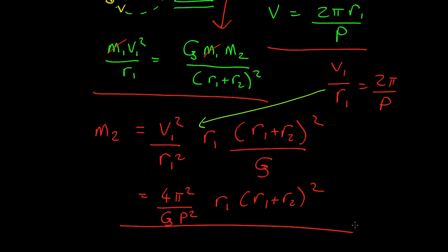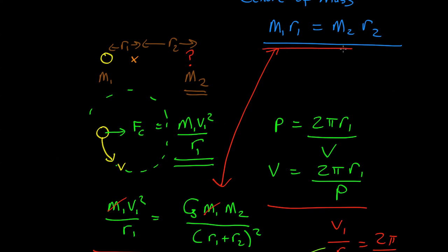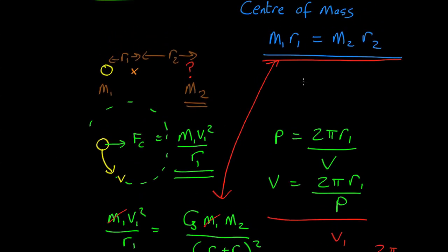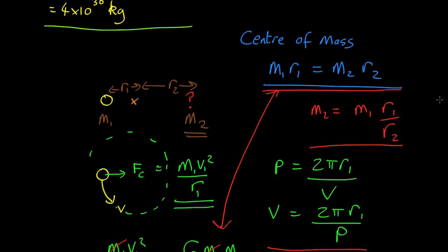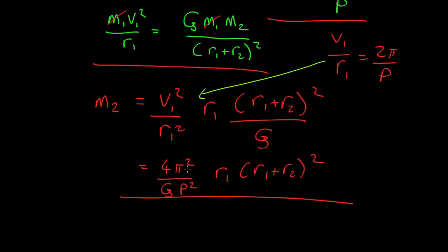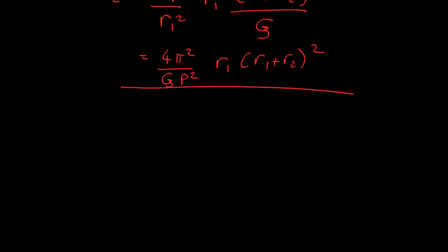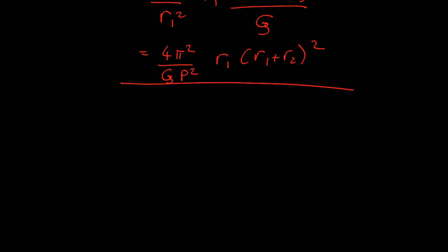Okay, so we have two equations. We have this equation, which can be rearranged as M2 equals M1 R1 over R2. So, that's an equation for M2 as a function of R2. And we have another equation for M2 as a function of R1. So, we can plot the value of M2 against an assumed value of R2.